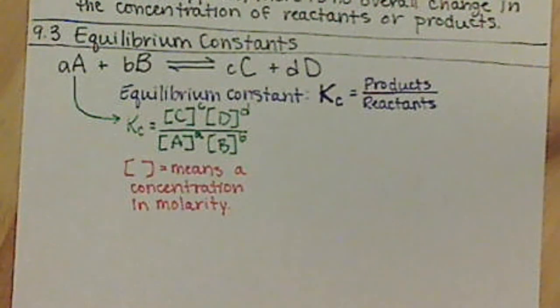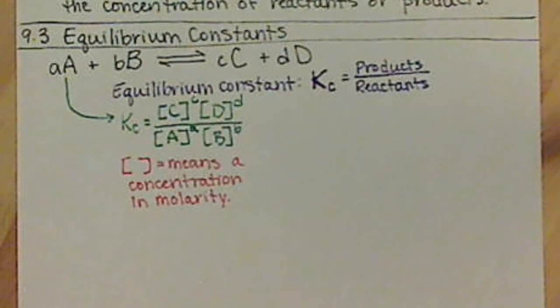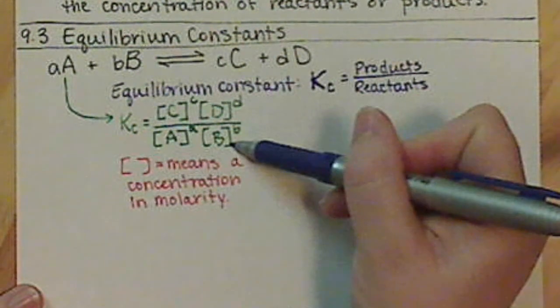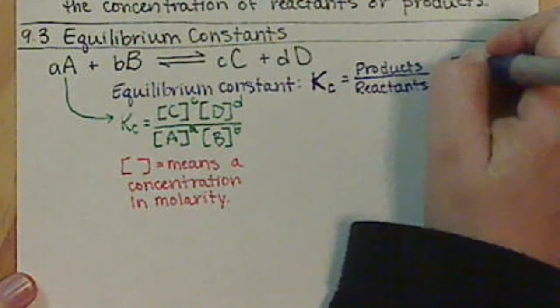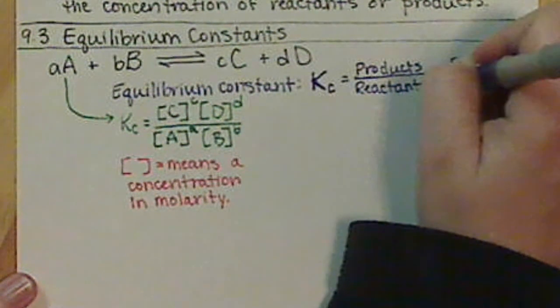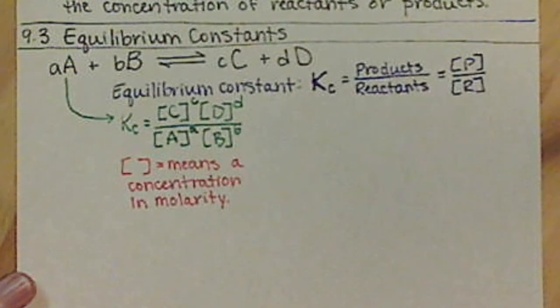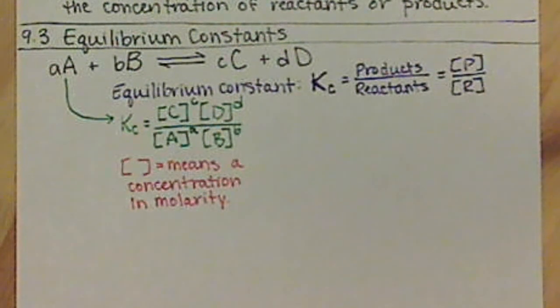Remember, molarity is our more common concentration used in chemistry, and that's actually what we're going to be using for chapters 9 and 10 exclusively. So we're basically looking, we have our products over our reactants. So sometimes it's easy to shorthand this, a capital P in square brackets for products, and a capital R in square brackets for reactants, just as a quick reminder for you.